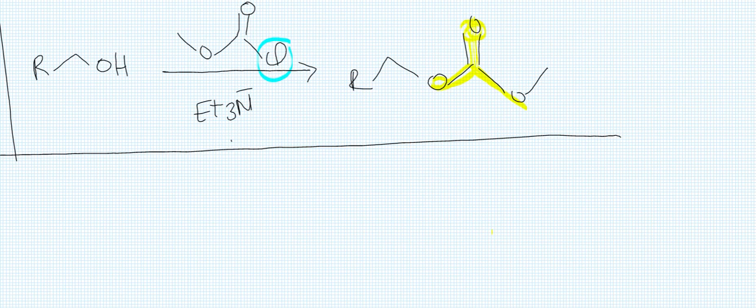Okay, so another way to protect the alcohol is to use methyl chloroformate and a base. So we form a protected alcohol as a carbonate. So this is a carbonate in yellow, highlighted in yellow.